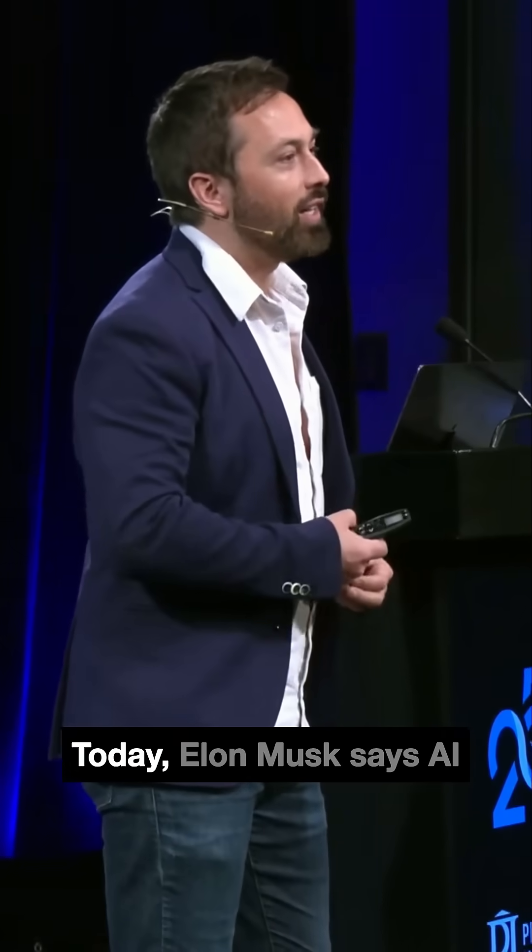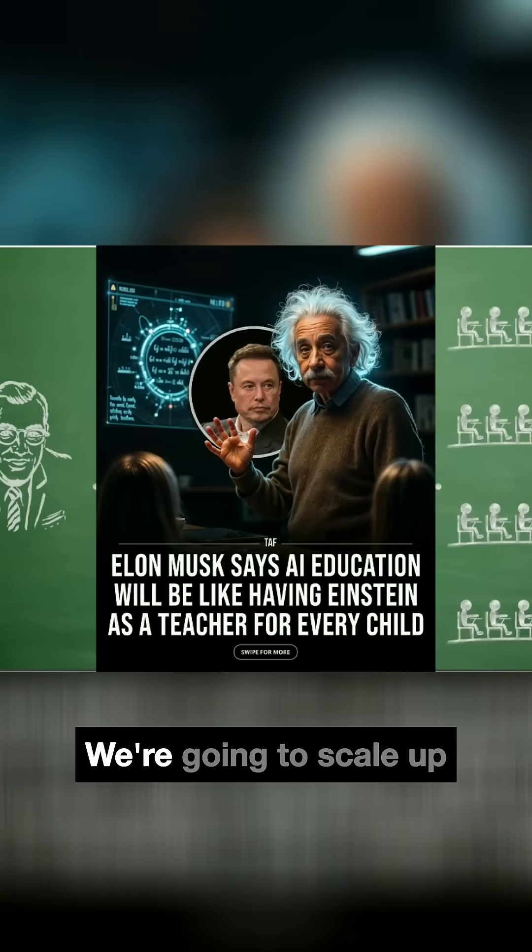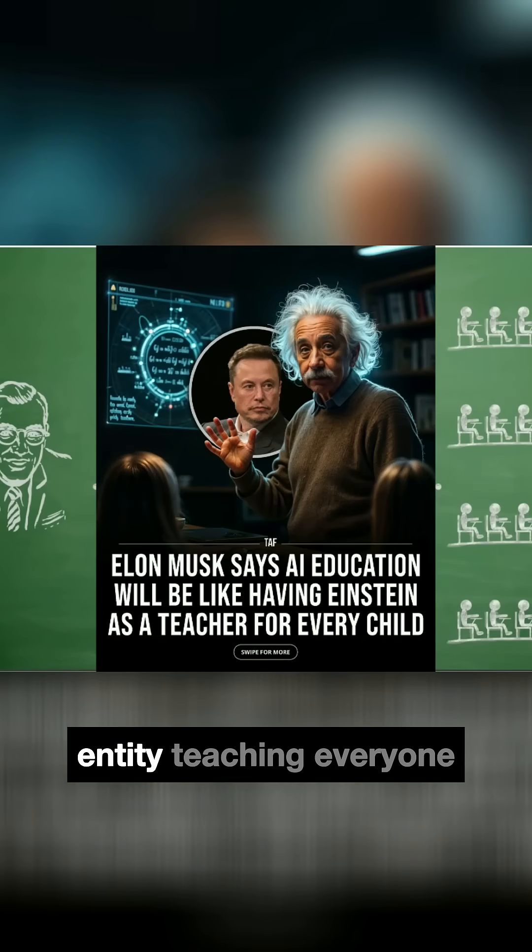And people see the same thing today. Elon Musk says AI education will be like having Einstein as a teacher for every child. It's the same idea. We're going to scale up the best and the brightest, have this most intelligent entity teaching everyone instead of what we have today.